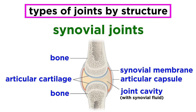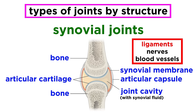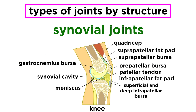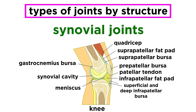The synovial membrane together with the fibrous layer that flanks it comprise the articular capsule. Beyond that are some reinforcing ligaments, as well as nerves and blood vessels. Some synovial joints also have fatty pads or discs of fibrocartilage separating the articular surfaces, also known as menisci. Closely associated with synovial joints are often bursae — flattened fibrous sacs containing synovial fluid — as well as tendon sheaths, which are similar but longer and wrap around a tendon. These serve to lubricate certain surfaces and reduce friction between adjacent structures.